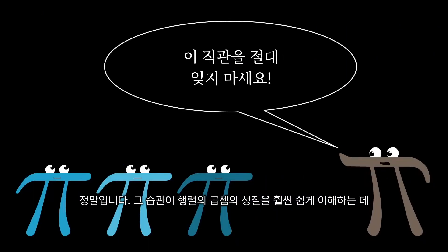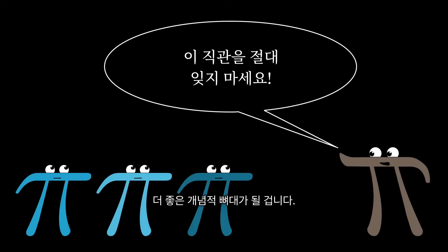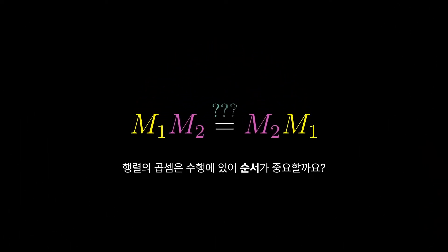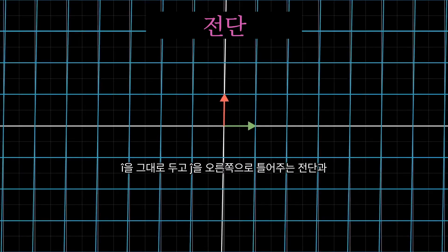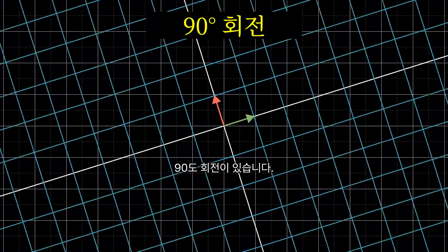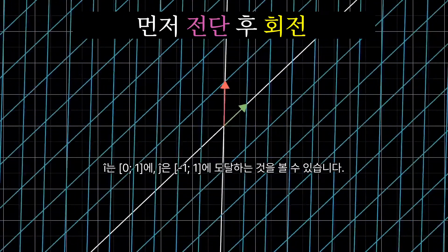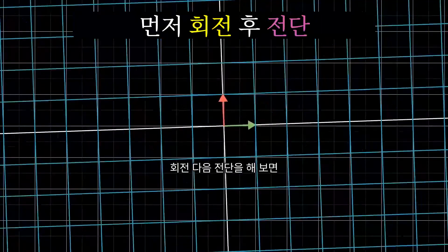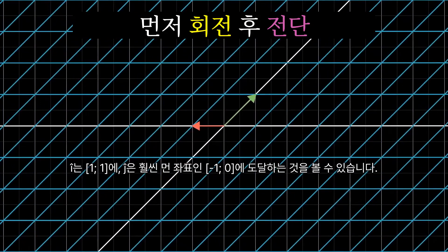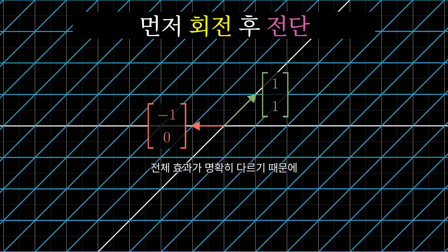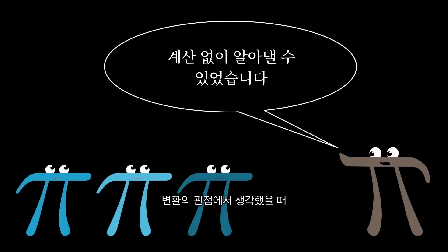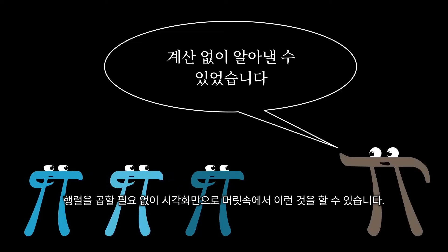But I really do think that before memorizing that process, you should get in the habit of thinking about what matrix multiplication really represents: applying one transformation after another. This will give you a much better conceptual framework that makes the properties of matrix multiplication much easier to understand. For example: does it matter what order we put the two matrices in when we multiply them? Take a shear which fixes i-hat and smooshes j-hat over to the right, and a 90-degree rotation. If you first do the shear then rotate, i-hat ends up at 0, 1 and j-hat ends up at negative 1, 1 — both generally pointing close together. If you first rotate then do the shear, i-hat ends up at 1, 1 and j-hat is off in a different direction at negative 1, 0. The overall effect is clearly different, so evidently order totally does matter. By thinking in terms of transformations, that's the kind of thing you can reason about in your head by visualizing — no matrix multiplication necessary.